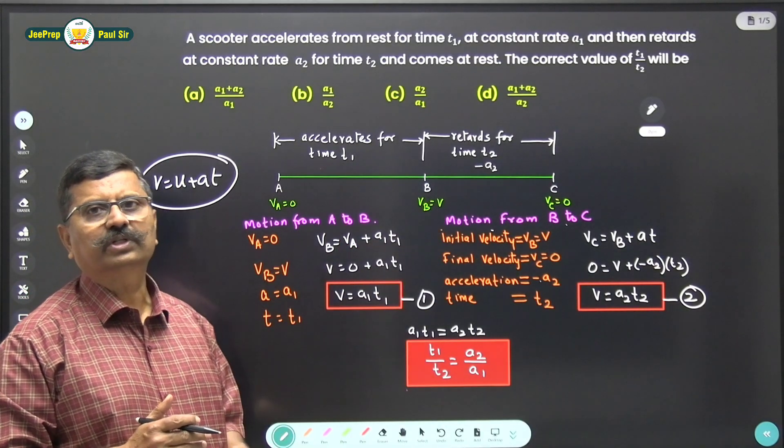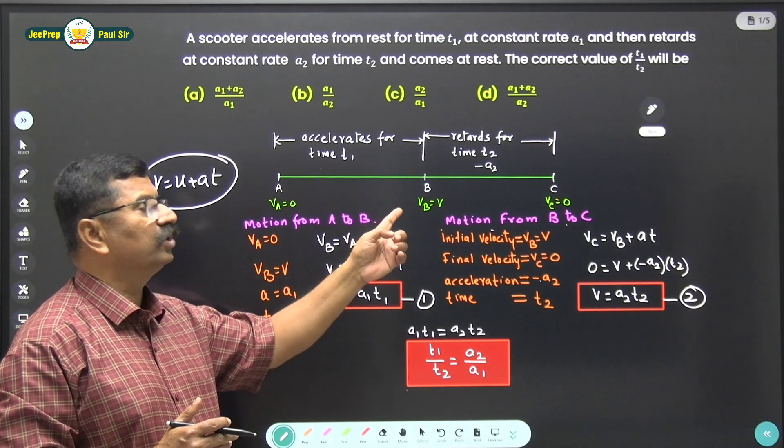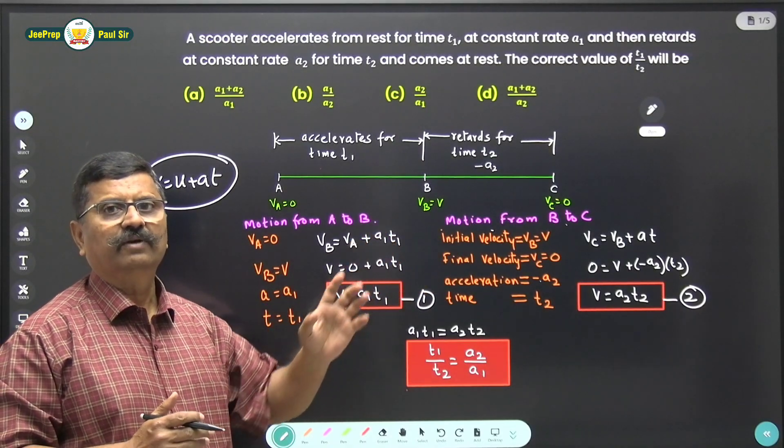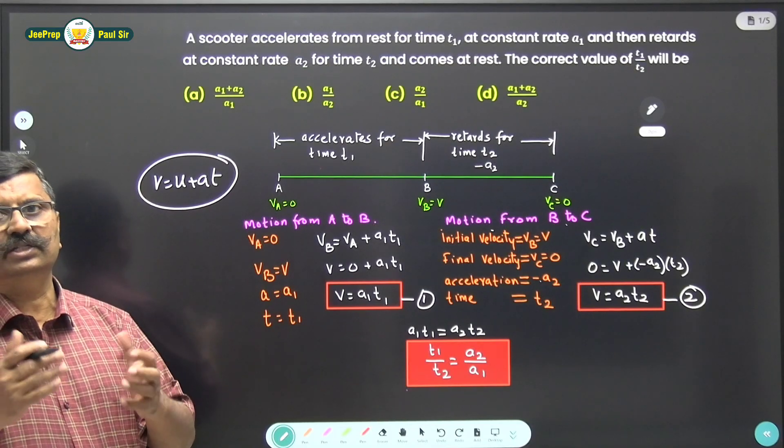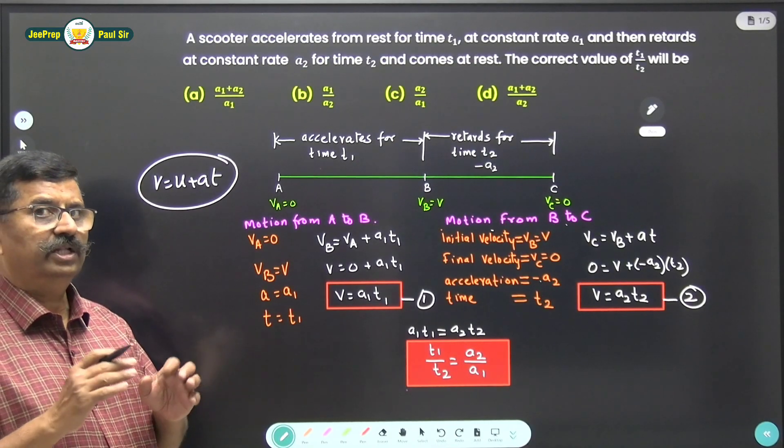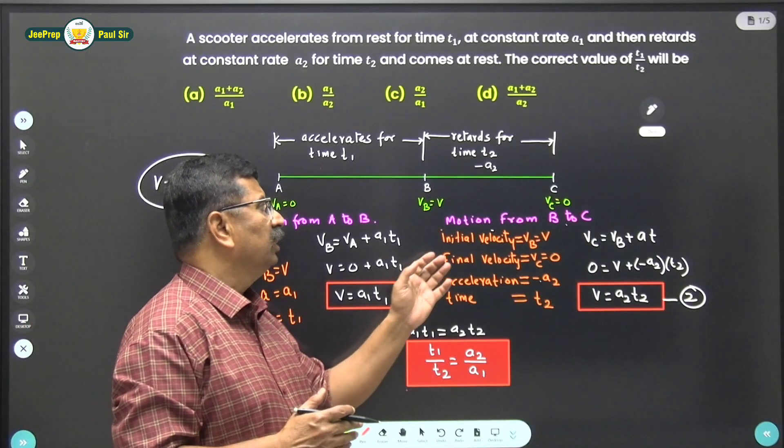Now let us go for another motion of the scooter from B to C. From B to C, the scooter retards. So the acceleration is a negative acceleration, that is minus a2, and that is for time t2 seconds.